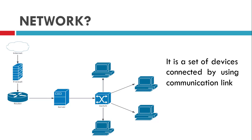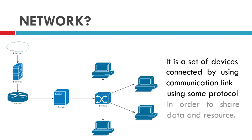That communication link may be wireless. Now after the connection happens between devices and one device wants to transmit a message to another device, they must follow some rules. Those rules are called protocols in terms of networking. So we can add that they communicate using some protocol. The objective for connecting these devices is to share data and resources. So the definition of network is: it is a set of devices connected using some communication link — that link may be wired or wireless — using some protocols in order to share data and resources. The devices connected in the network must also be able to send and receive signals.